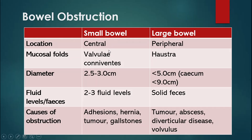The next obvious feature is the mucosal fold. In the small bowel, these are called valvulae conniventes — circular folds that reach around the whole circumference of the intestine. In contrast, haustra in the large bowel don't reach around the whole circumference; they are only partially on the side, so you don't see them crossing the whole lumen. That's the main difference between valvulae conniventes and haustra.